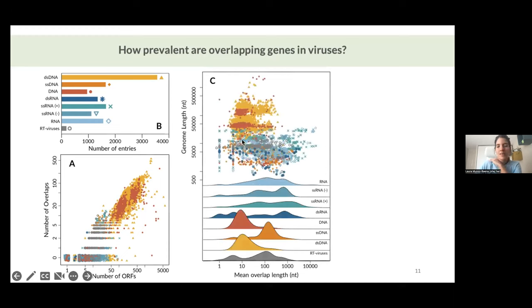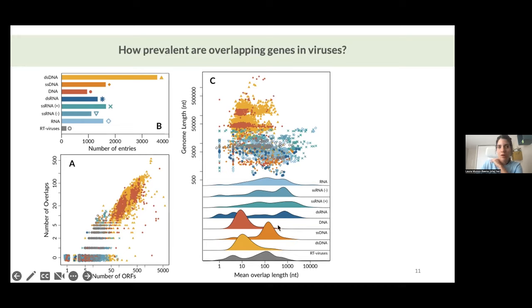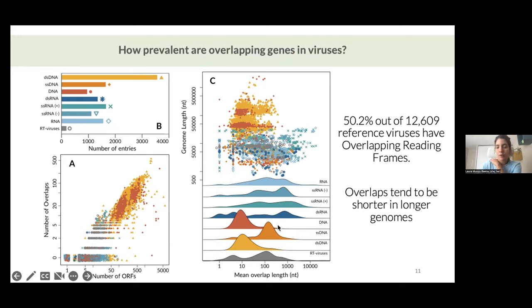We noticed a different trend when evaluating overlap length — how long overlaps actually are. For longer genomes, such as DNA viruses that infect bacteria or some Pandoraviruses, which have very long genomes, their overlaps tend to be actually pretty small. RNA viruses, on the other hand, tend to be around 10,000 nucleotides long, but their overlaps tend to range between 10 and 1,000 nucleotides. So they are smaller genomes with very long overlaps. We concluded that around half of our database were viruses with some type of overlap, and that overlapping reading frames tend to be shorter in longer genomes.